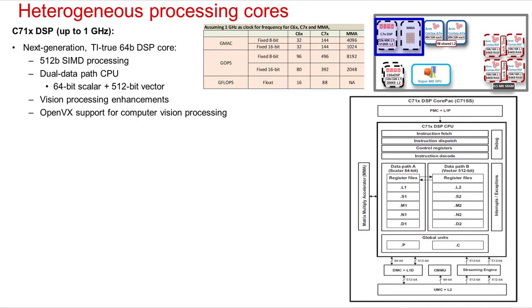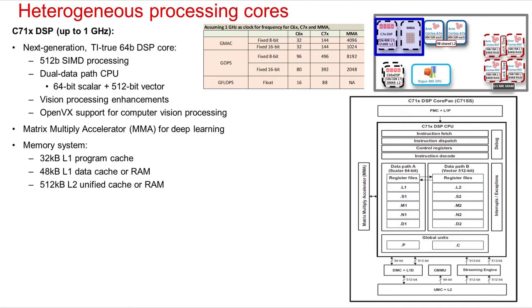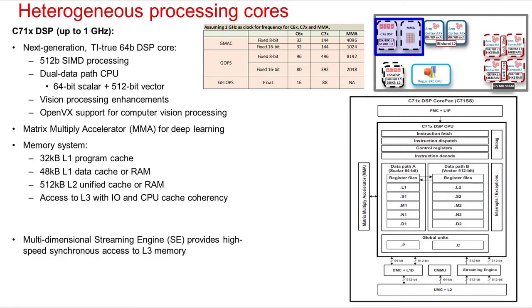The C71X instruction set contains enhancements specific to vision processing and facilitates efficient support of OpenVX for machine vision compute. The closely coupled matrix multiply accelerator or MMA enables deep learning capability as an extension to the C71X instruction set. One key to achieving such high performance is a multi-level cache system. The L1 caches are fed efficiently from the L2 cache via a dual 512-bit streaming engine running synchronously to the CPUs at 1 GHz. The C71X DSP is also cache coherent with the A72 MPU core, allowing efficient data sharing between cores without manual cache operations. Thanks to its ARM-compliant MMU, the C71X DSP may also access virtualized memory space managed by the A72 high-level OS.